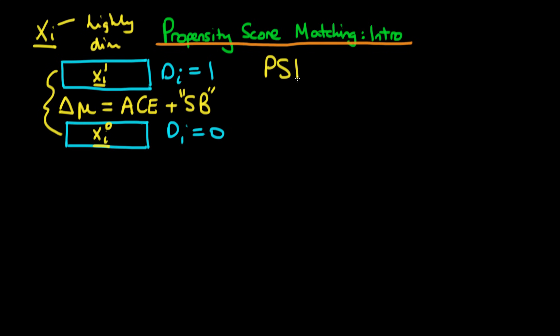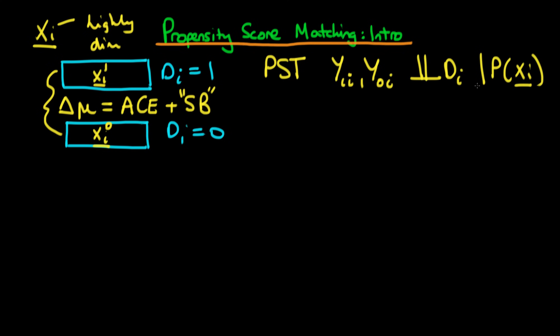Luckily, the propensity score theorem says that if the conditional independence assumption is true, then the potential values of the outcome variable — y1i and y0i — are themselves conditionally independent of the treatment if we condition on the propensity score of an individual. The propensity score provides a way out of this issue of high dimensionality, because the propensity score itself is a scalar function — it results in a scalar variable that only takes on a value between 0 and 1. Hence, we could find individuals with similar levels of propensity scores and match on that criterion, rather than having to search through a list of covariates and match across all of those different factors.